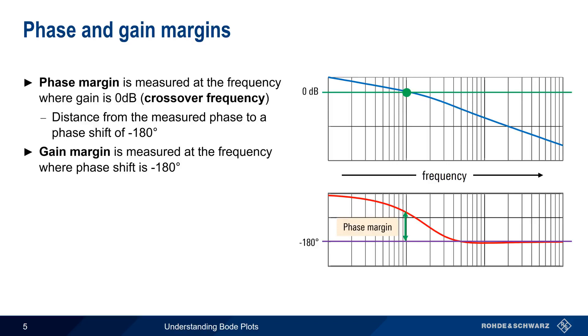Gain margin, on the other hand, is measured at the frequency where the phase shift equals minus 180 degrees. Gain margin indicates the distance, in dB, from the measured gain to a gain of 0 dB.